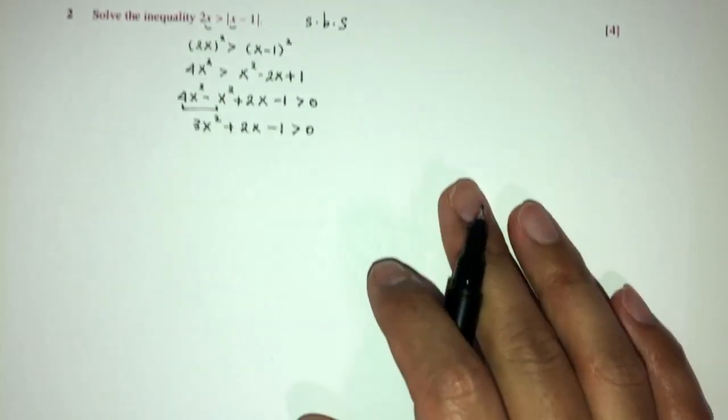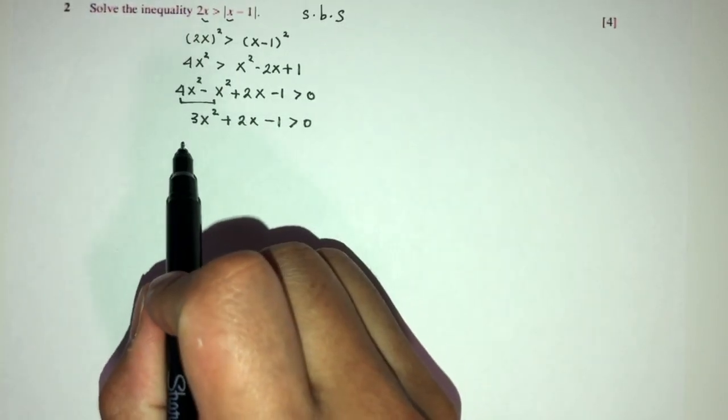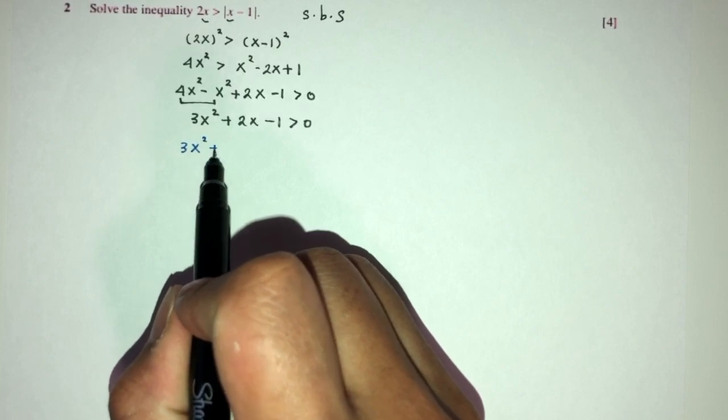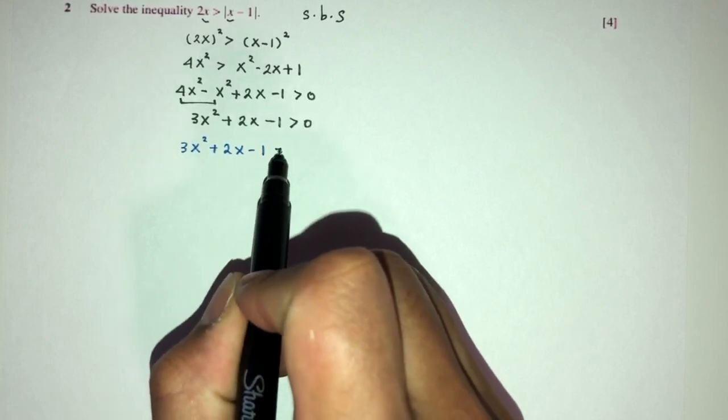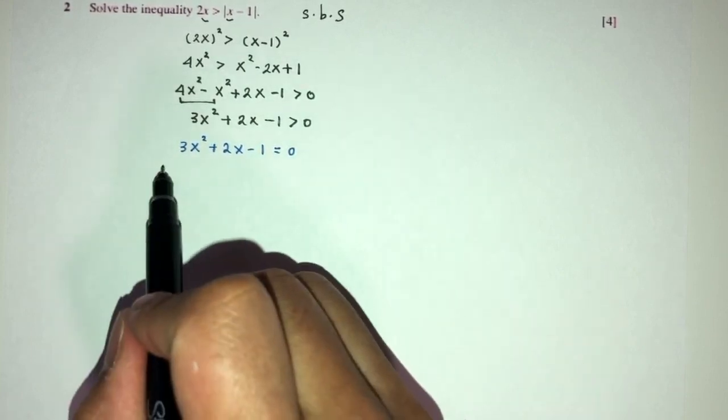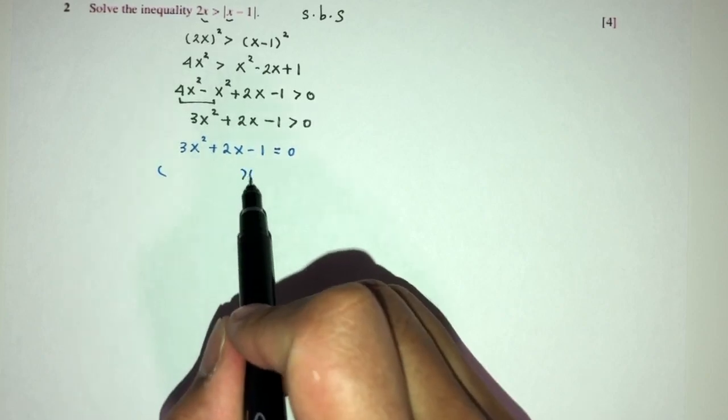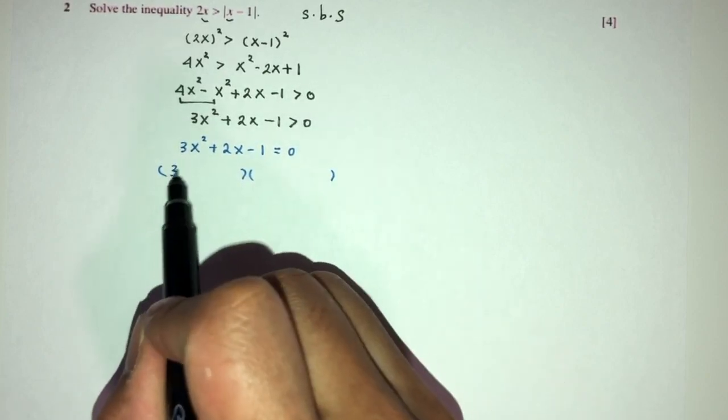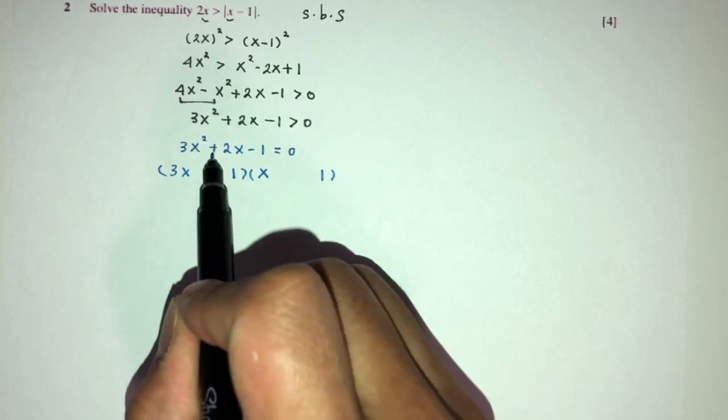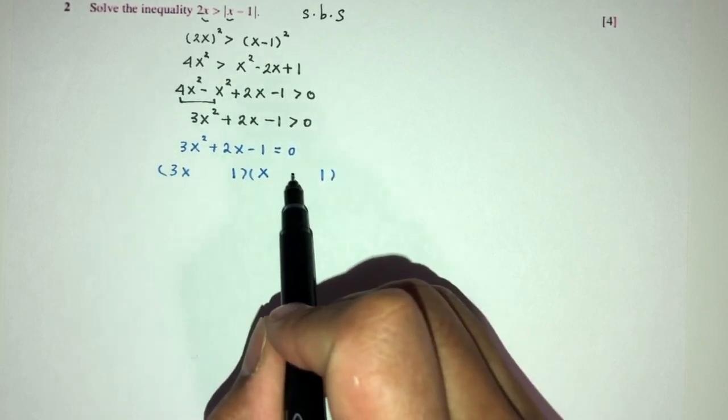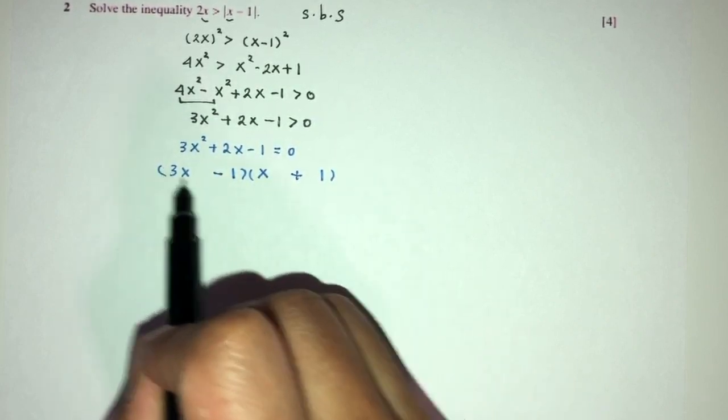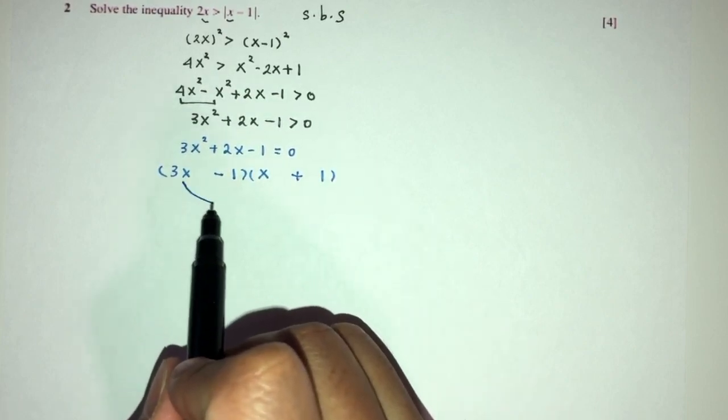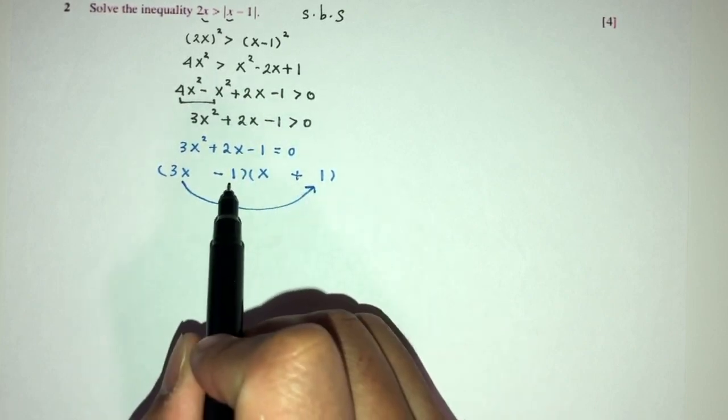The next step is we have to find the critical values of this inequality. Take the same thing, but equate to 0 to find the critical values. Let's try to factorize. We have 3x square. You will have 3x times x. 1 is 1 times 1. To get plus 2, we have to have plus 3 minus 1.